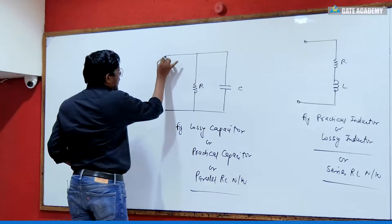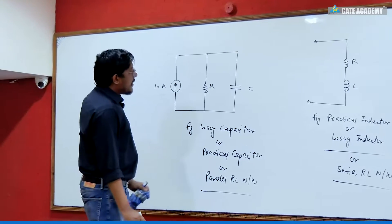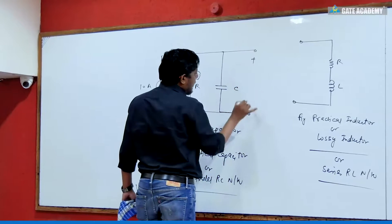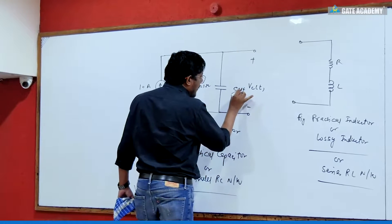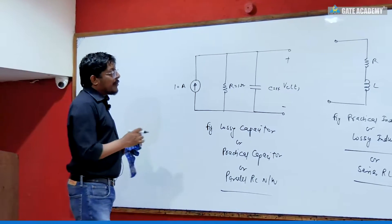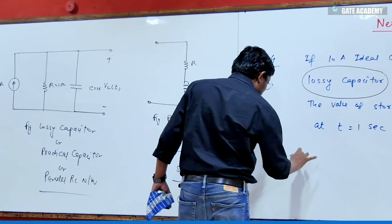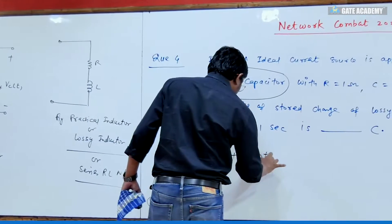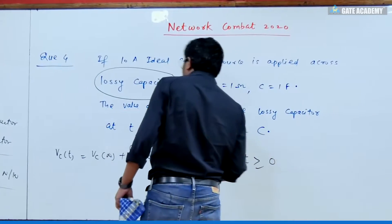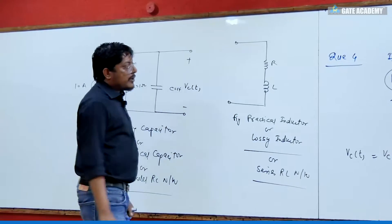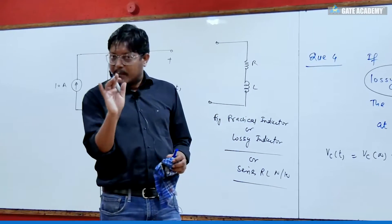Now, what was given to you? A 10 Ampere ideal current source is applied to this RC network. This is a transient question. The voltage across the capacitor is Vc(t). R value is 1 Ohm, C value is 1 Farad. This is a first-order network — the equation of a transient first-order network with only one energy-storing element.